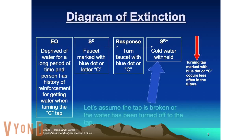Here we have a diagram of extinction. The establishing operation is an individual being deprived of water for a long period of time, and they have a history of reinforcement for getting water when turning the tap labeled C. The SD, or the cue in the environment, is that they see the faucet marked with the blue dot or the letter C. The response or the behavior is that they turn that faucet.